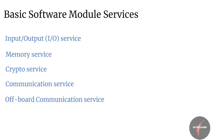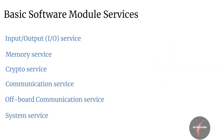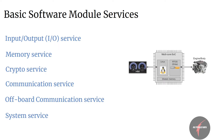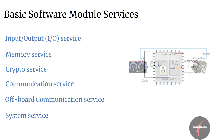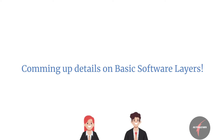Off-board communication service: the basic software module provides standardized access to vehicle-to-external communication, in-vehicle wireless network systems, and ECU off-board communication systems. Lastly, system services: the basic software module provides standardizable services such as operating system, timers, error memory, and ECU-specific services such as ECU state management, watchdog manager, and library functions. In the upcoming video, we will look into the details of each basic software layer. Thank you.